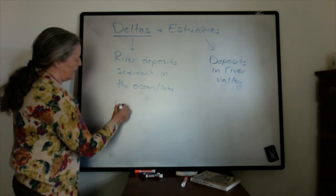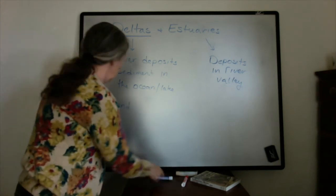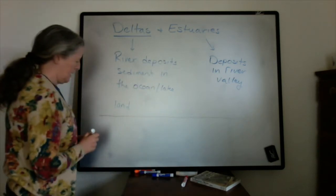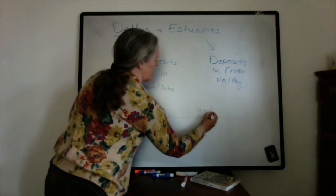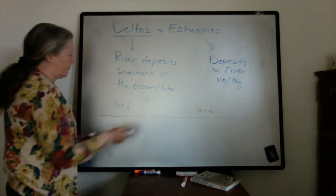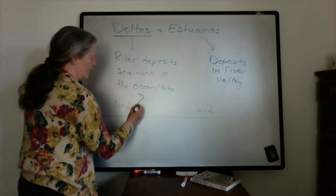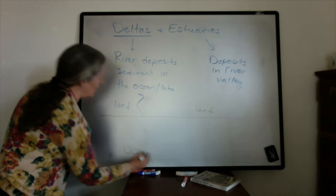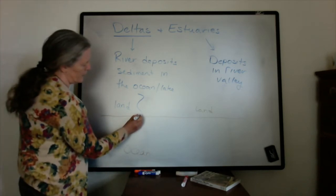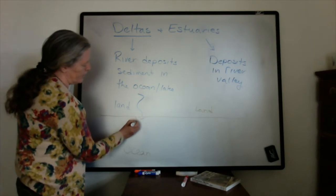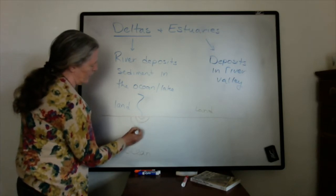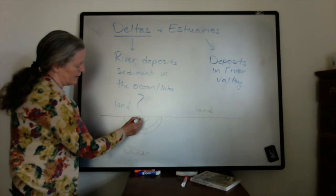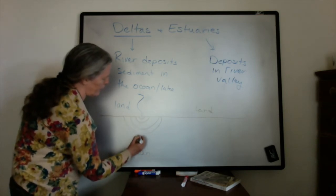So if we look at a diagram — we have land going all the way across, and our river is flowing in, and this is the ocean. For a delta, there's so much sediment that the river builds out. We say that this is a process of building out, or progradation.